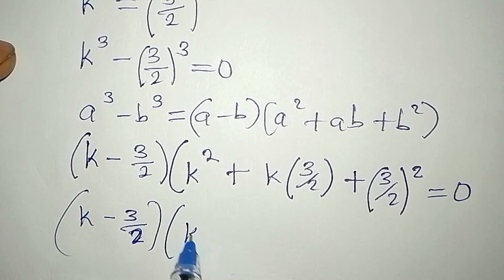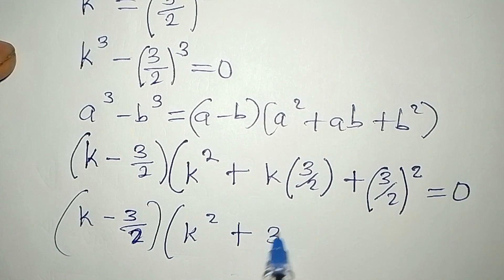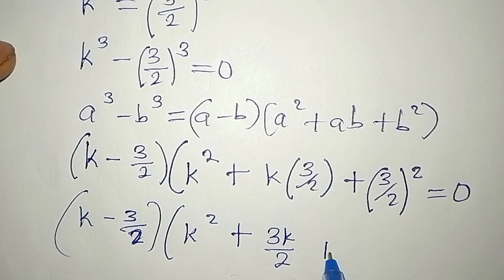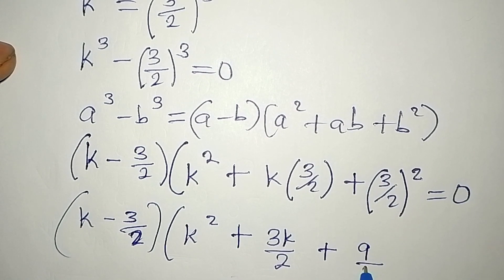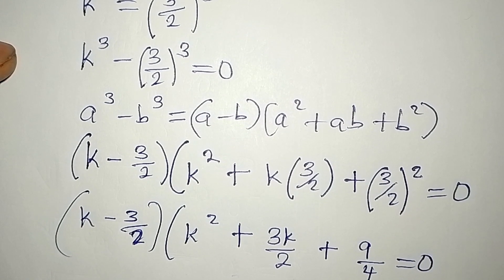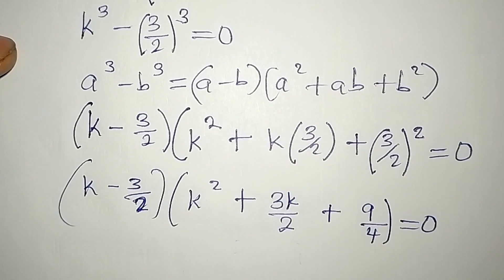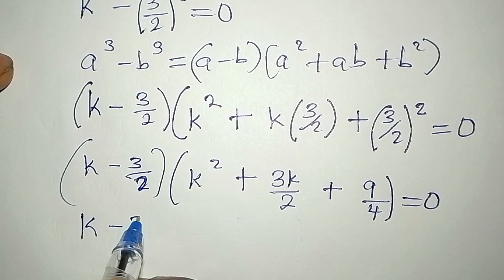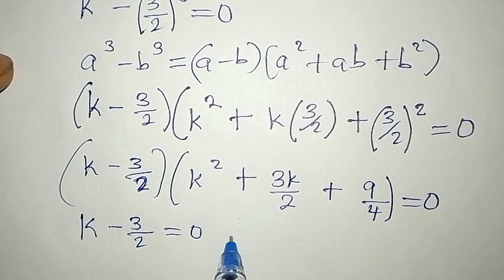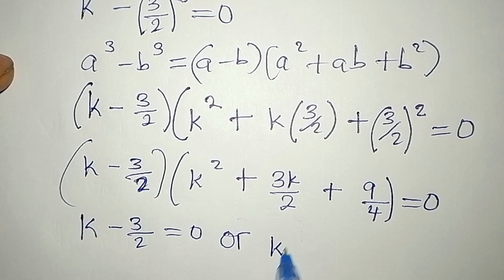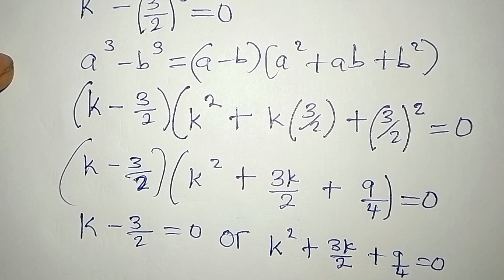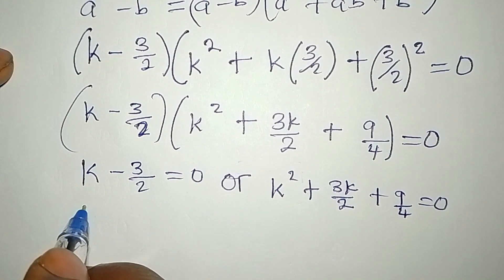So we have (k − 3/2) as one factor, then (k² + 3k/2 + 9/4) equals zero. From here we can say it is either k − 3/2 equals zero, or k² + 3k/2 + 9/4 equals zero.